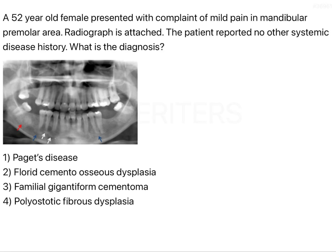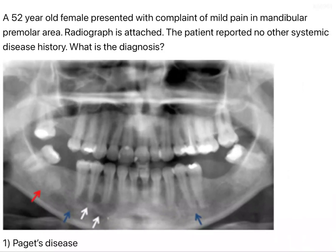If we just see the radiograph here, it shows some radiolucent areas in the premolar region. At the same time, you will be able to see some radio-opaque areas as well. This is the radio-opaque area.